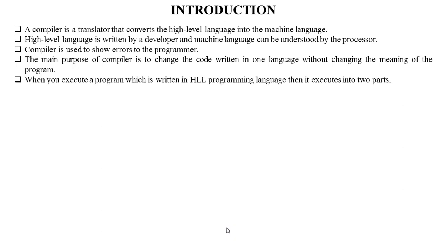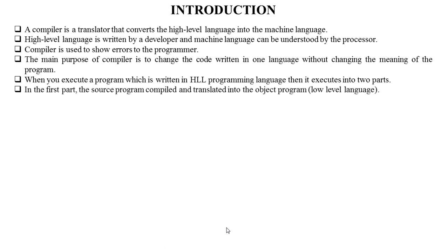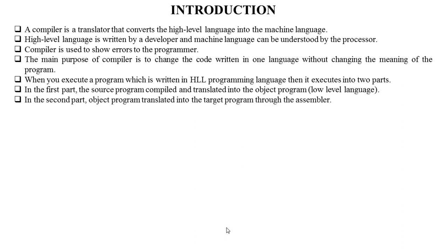When you execute a program which is written in high-level language, it executes in two parts. In the first part, the source program is compiled and translated into the object program, that is low-level language. In the second part, the object program is translated into the target program through the assembler.